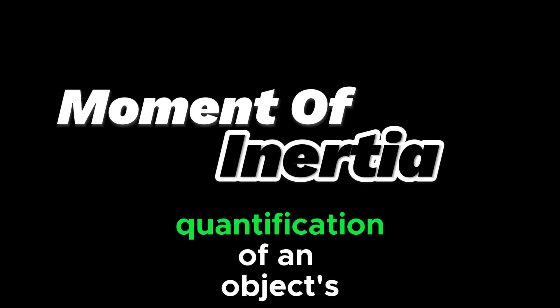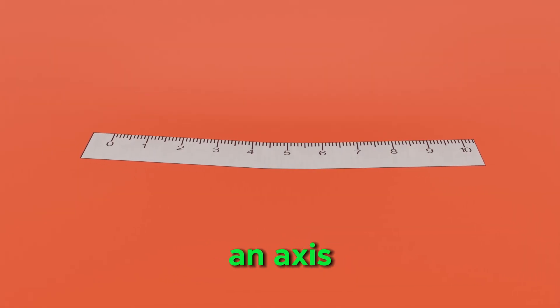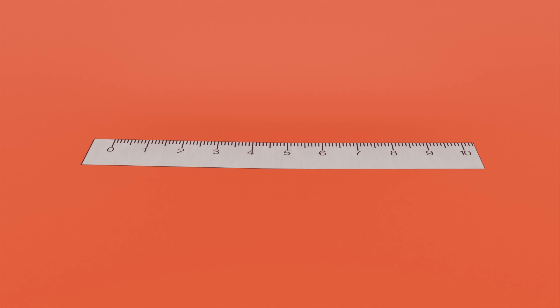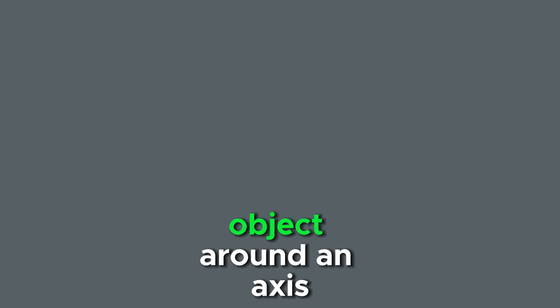It's the quantification of an object's resistance to changes in its rotational motion around an axis. In simple terms, moment of inertia tells us how easy or difficult it would be to rotate an object around an axis.